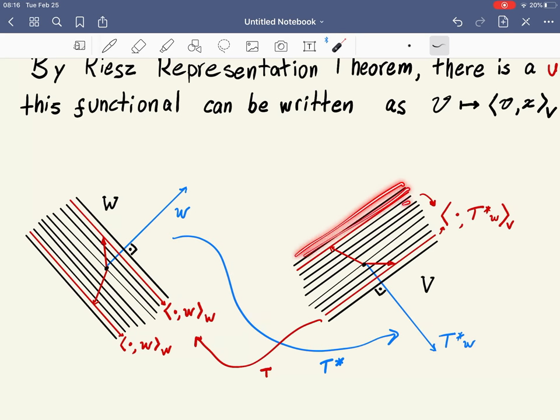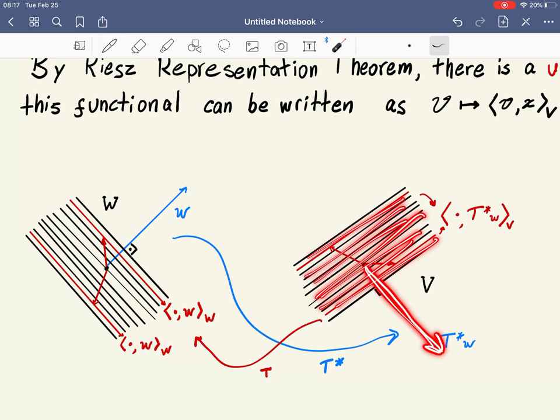We're going to define level curves on V. These level curves are defined in a way that depends on w, and we define T star w as simply the vector that is associated with these level curves by this relationship here.